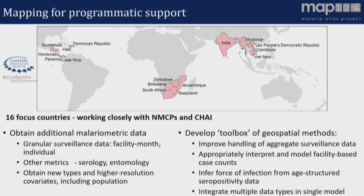Examples of that would include improving the way we can handle aggregated surveillance data — can we get more information out of it? Models that can appropriately interpret and model facility-based case counts. Models around serology and how we can potentially infer things like force of infection and how that varies spatially and temporally based on seroconversion observations in individuals. And importantly, can we join all this up in integrated modeling frameworks so that whatever types of data happen to be available in a given country, we can use them together and draw strength across different metrics that may have complementary strengths and weaknesses.